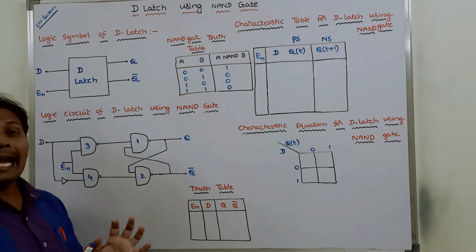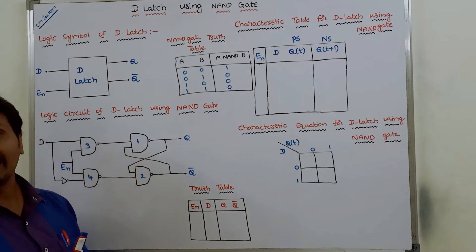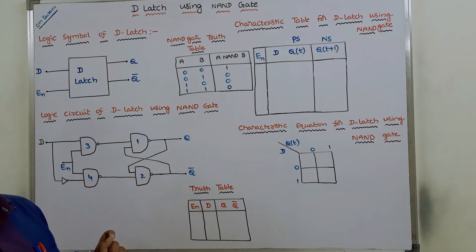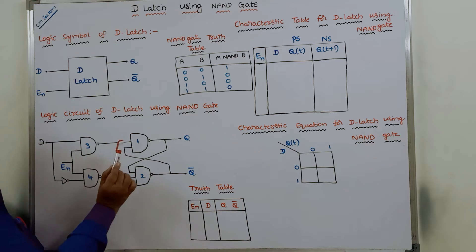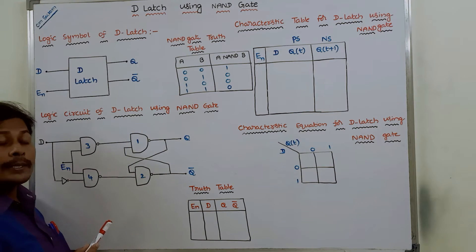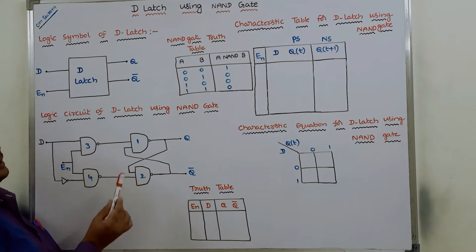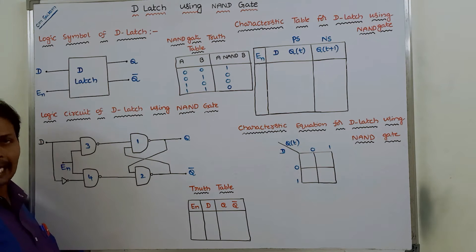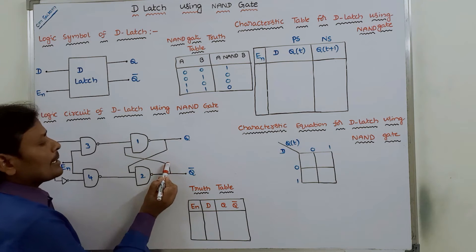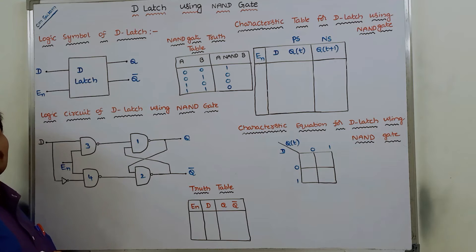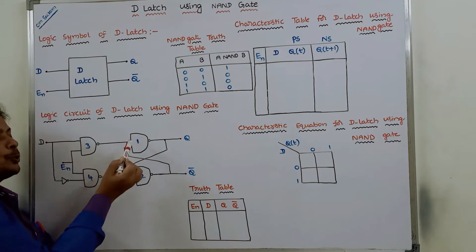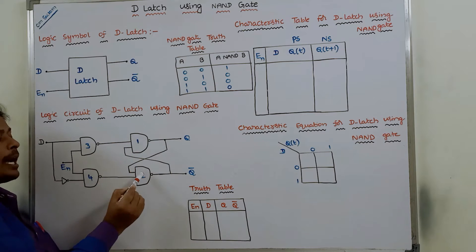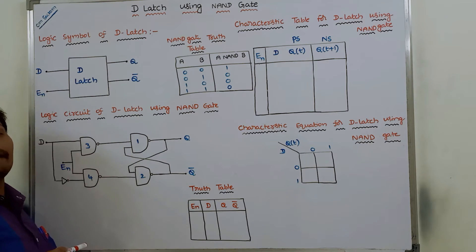Now, what is the logic circuit we have to use to implement D latch using NAND gates? There are four NAND gates required to implement D latch, and additionally one NOT gate is also used. The first and second NAND gates are cross-coupled with each other — the output of the first NAND gate is connected as input of the second NAND gate, and the output of the second NAND gate is connected as input of the first NAND gate.